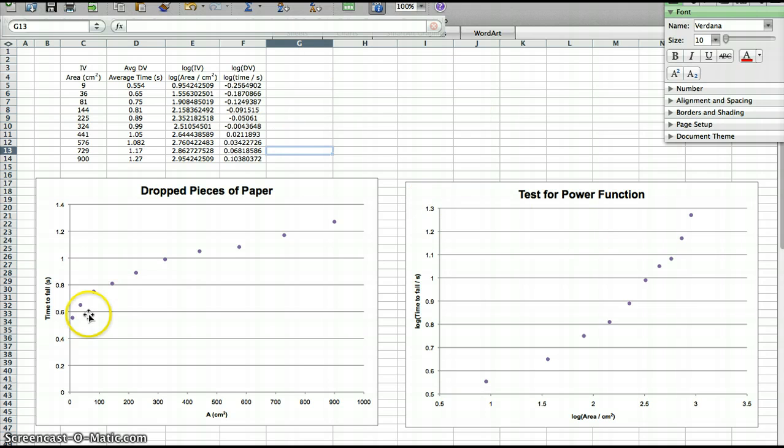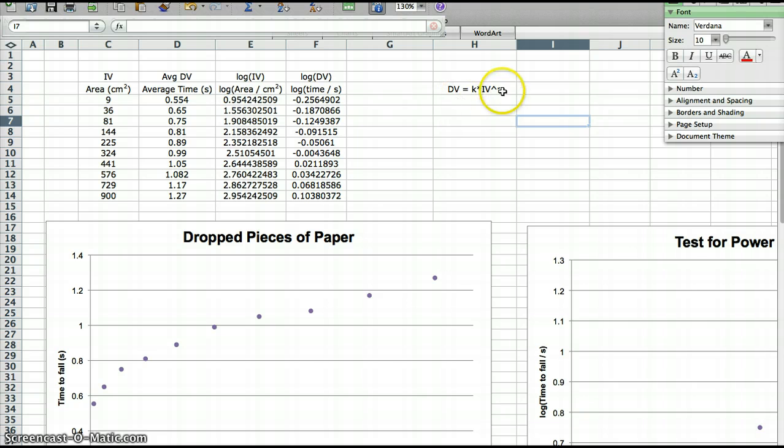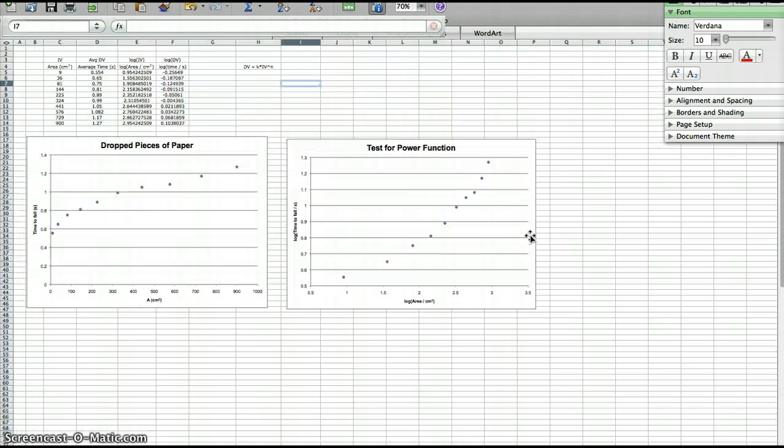Well, here's the reason. This raw data graph has a y-intercept. And log-log graphs don't really know what to do with y-intercepts. They're only good for figuring out the power of your function. So if you have DV equals k, a constant, times IV raised to the n power, n is the power. And you find out what n is by looking at the slope of your log-log graph.